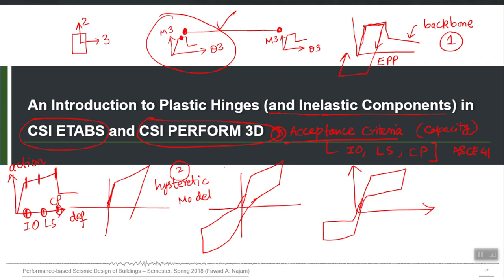You can also go element by element and extract the element results in more detail. Just as in a test where I gave you the maximum rotation caused by the MCE level earthquake and you calculated the DC ratio to check whether that rotation exceeded a certain performance level, this is exactly what the program is doing — at a larger scale and more systematically. It is calculating DC ratios using your given capacities and the calculated demand from analysis, and telling you whether a particular DC ratio has been exceeded or not. This is the concept of acceptance criteria.